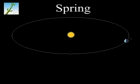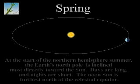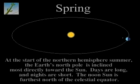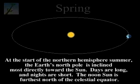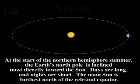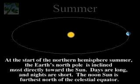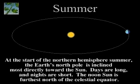At the start of the Northern Hemisphere summer, the Earth's north pole is inclined most directly toward the Sun. Days are long and nights are short. The noon Sun is furthest north of the celestial equator.